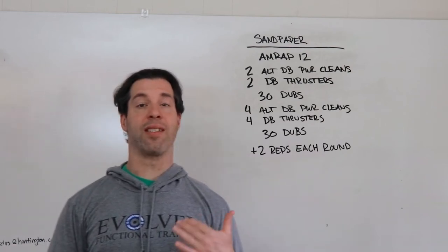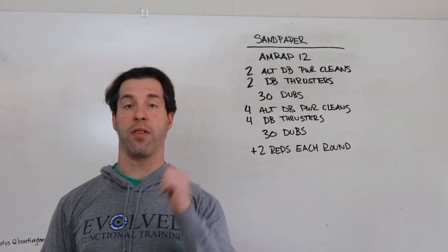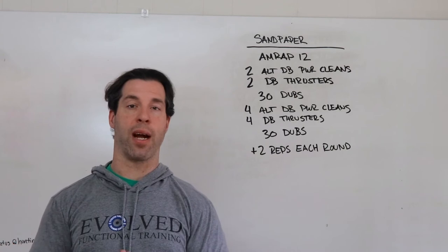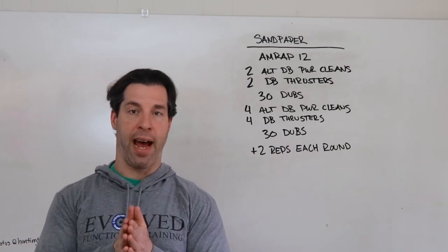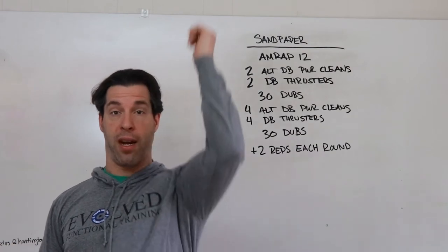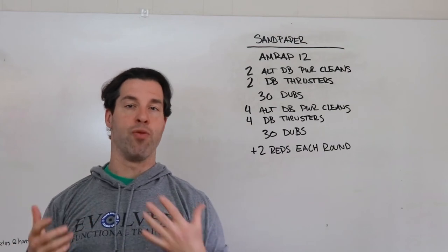Now the dumbbell movements, these are single arm movements. On the dumbbell power cleans, you simply alternate every single repetition. On the thrusters, I would recommend breaking that in half. So for example, if it's the round of six, I would do three on this side before I switch over to this side and do another three.